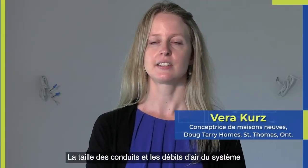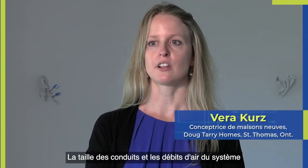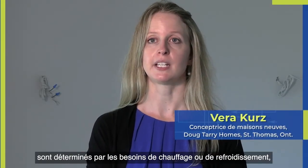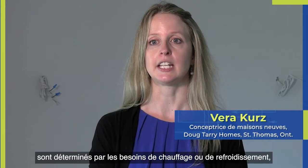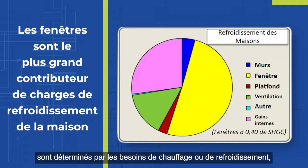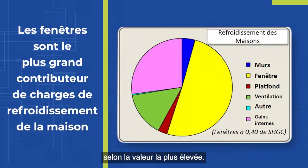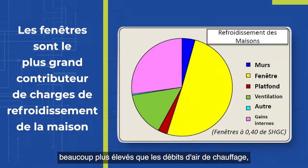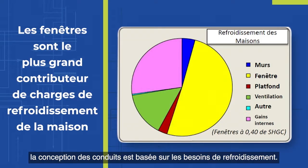Duct sizes and system air flows are determined by either the heating or cooling requirements, whichever is larger. So when cooling air flows are a lot higher than the heating air flows, the duct design will be based on the cooling requirements.